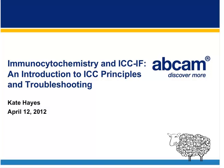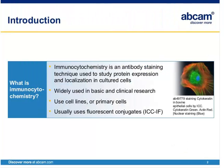Today's presentation is going to be an introduction to ICC principles and troubleshooting. So how do we define immunocytochemistry? We would classify it as an antibody staining technique that's used to study protein expression and localization in cultured cells. It's very widely used in basic and clinical research, and researchers use cell lines or primary cells in ICC, typically using fluorescent conjugates for detection. Today I'm going to be focusing mainly on immunofluorescence.